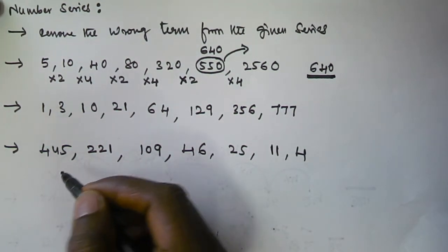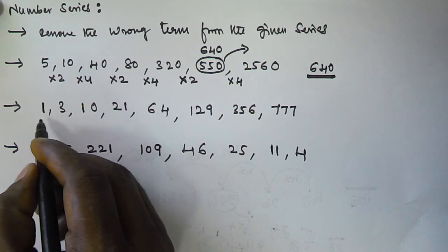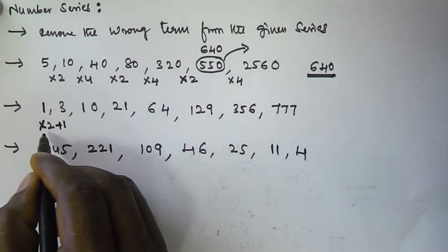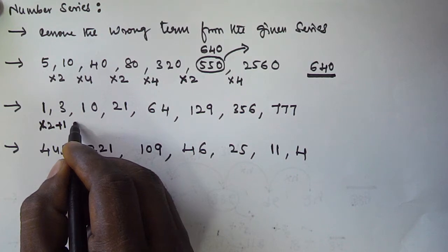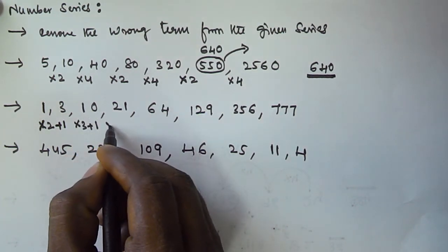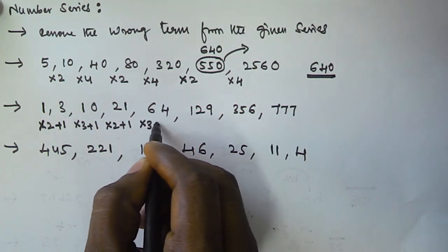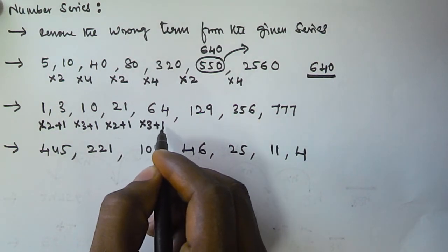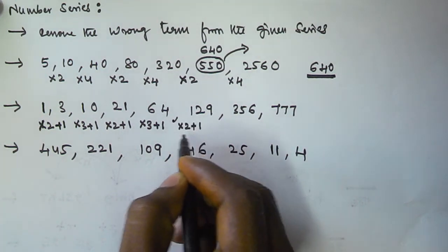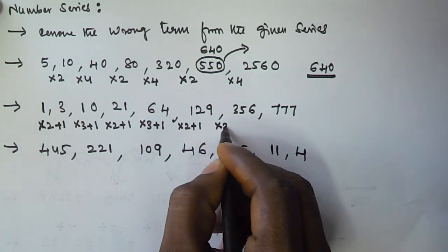Now the next problem: 1, 3, 10. How we get 3 from 1: it is 1 x 2 + 1 = 3. The next term: x 3 + 1, so 3 x 3 = 9, plus 1 is 10. Again x 2 + 1: 10 x 2 = 20, plus 1 is 21. Next term x 3 + 1: 21 x 3 = 63, plus 1 is 64. Next x 2 + 1: 64 x 2 = 128, plus 1 is 129.